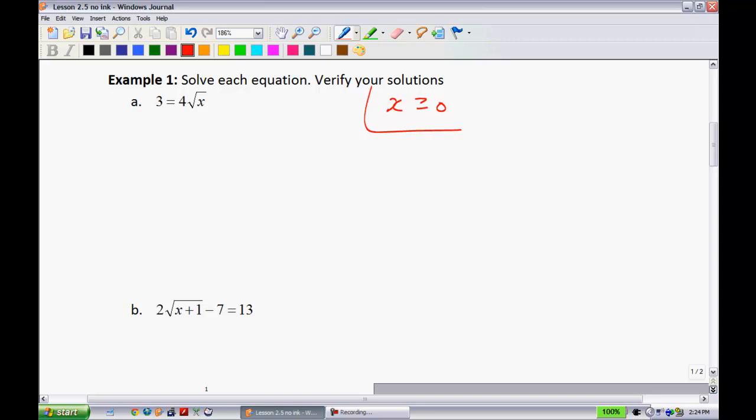Now, second step is isolate our radical. So I will divide both sides by 4. We have 3 quarters is equal to the square root of x. Now, to get x by itself, we will square both sides. And we have 9 out of 16 is equal to x. All right? So that would be your solution.